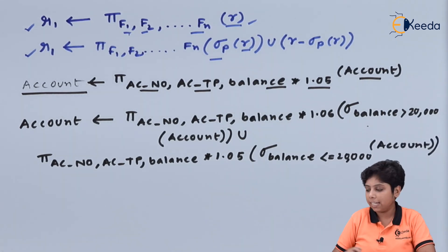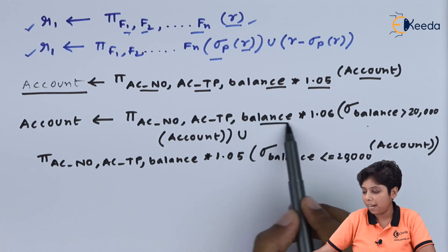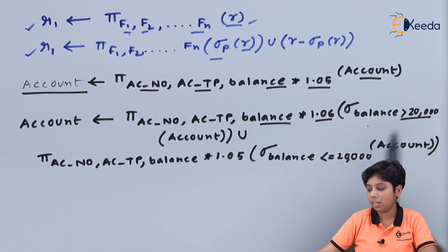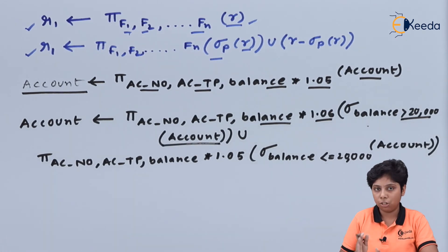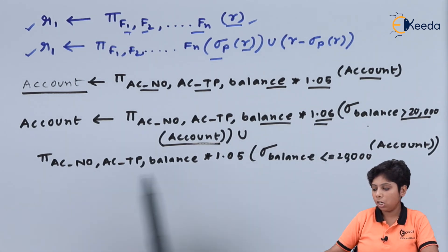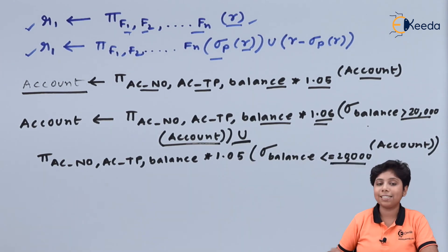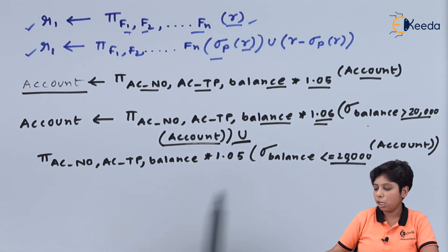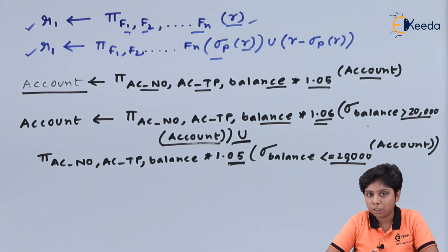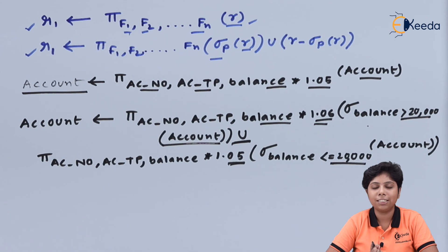Here we can see that we first update the balance by six percent interest if the balance is greater than twenty thousand — this is the innermost operation. Upon that we union or add the case where the balance is less than or equal to twenty thousand, giving a five percent interest. That is all for the updation part and for modifying a database. Thank you for watching this video; stay tuned with Ikira and subscribe.